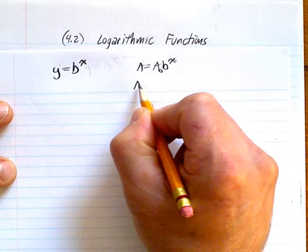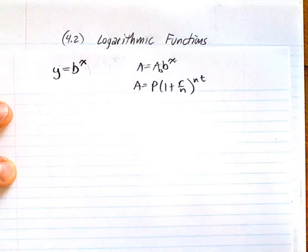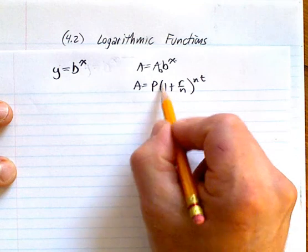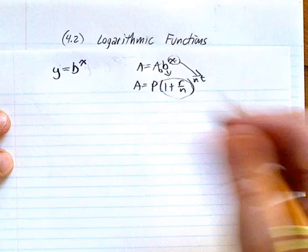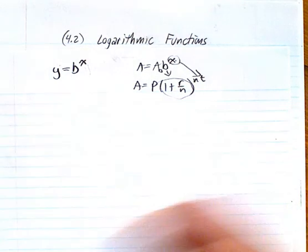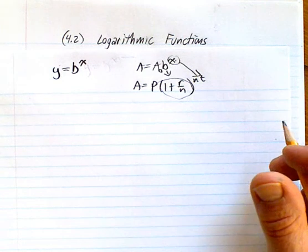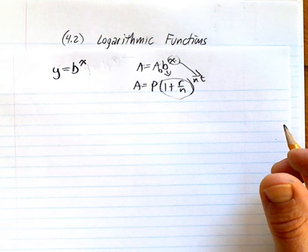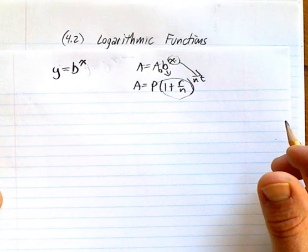And then we had compound interest that was this formula here. That is a specific formula for compound interest. You're doing essentially the same thing here where this is your B and this is your exponent. It's just for compound interest we've broken down into the various components: the rate at which your interest is growing, the time that has elapsed, the compounding periods per year.